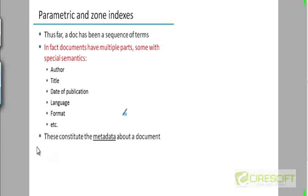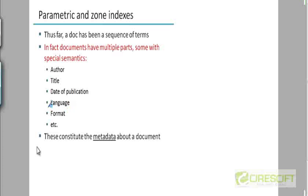What sort of structure can we exploit for information retrieval? We could look at structured information that is usually present for most documents on the web. For example, if you ever generated a Microsoft Word document and looked at the properties, it will have an author, a title, a date of publication or the date the file was created. Language itself could be encoded in the metadata — XML documents could specify what language they are in.